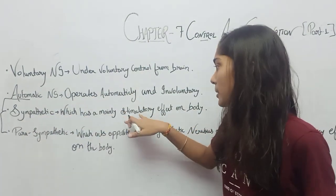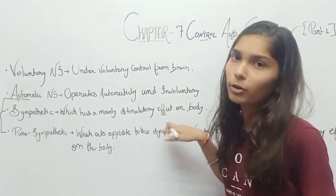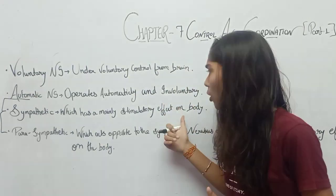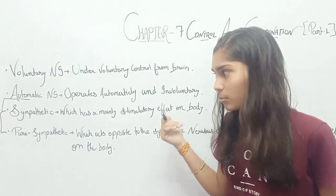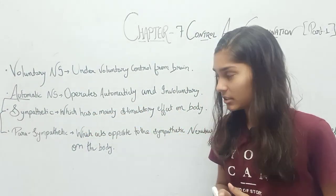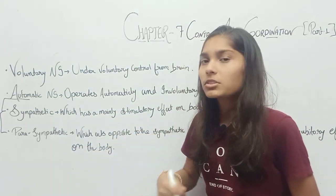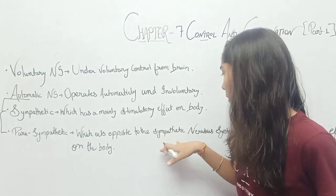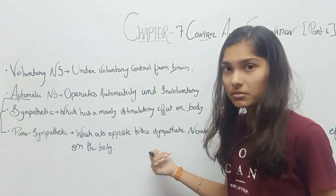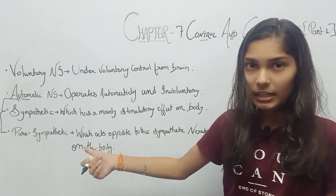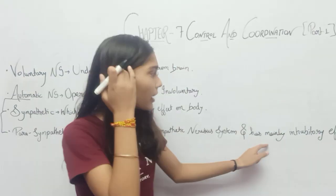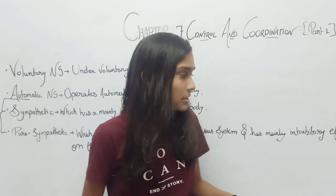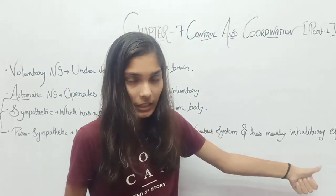The Sympathetic Nervous System has a mainly stimulatory effect on the body. The Parasympathetic Nervous System acts opposite to the Sympathetic Nervous System and has mainly inhibitory effects on the body.